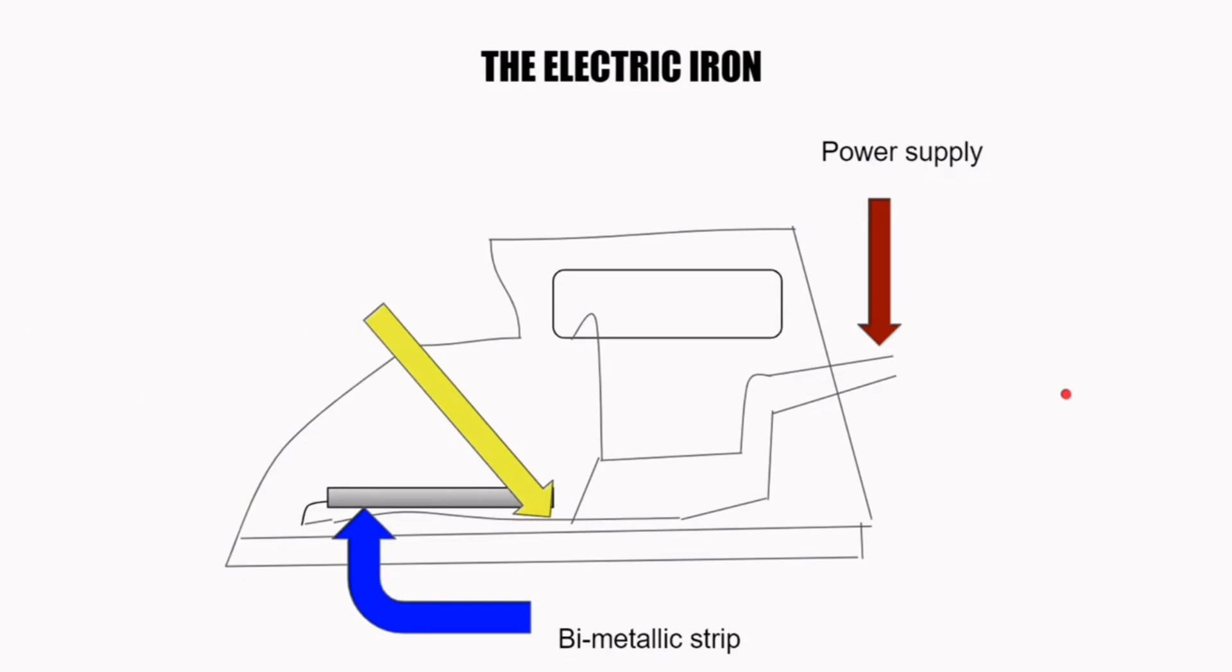When electric current is passed through a coil in an electric iron, the coil becomes very hot. Through conduction, the heat is transferred to the flat base plate which is then used to iron our clothes.